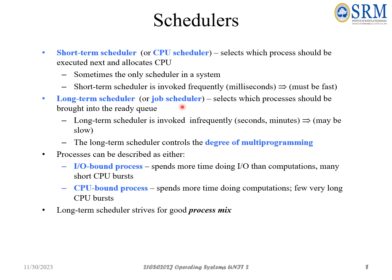The short-term scheduler selects which process should be executed next and allocates the CPU. Coming to the long-term scheduler, it selects which process should be brought into the ready queue. We also discussed about the five-state process model in the previous class.